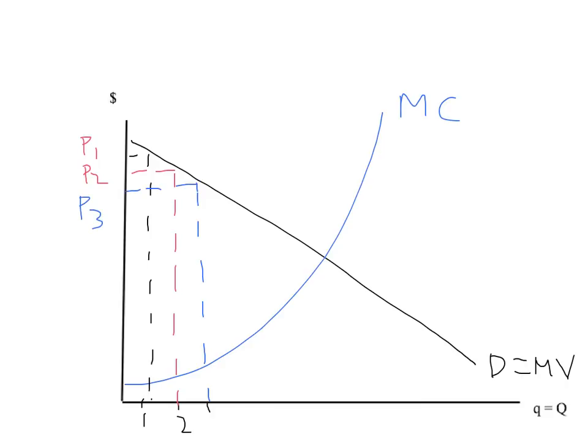So what's the marginal revenue curve for this monopoly? What is the extra amount the monopoly gets every time it sells an extra unit? Well, remember, because of price discrimination, it sets a high price for the first unit.